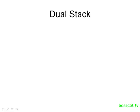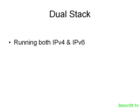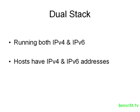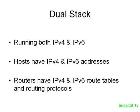Let's start with the dual stack approach, which is widely considered to be the best method. We're going to run both IPv4 and IPv6 at the same time, so no matter which type of protocol we see, we can support it natively. The hosts on our network are going to have IPv4 and IPv6 addresses, and likewise our routers will have addresses from both protocols, along with IPv4 and IPv6 route tables and routing protocols to support both versions.